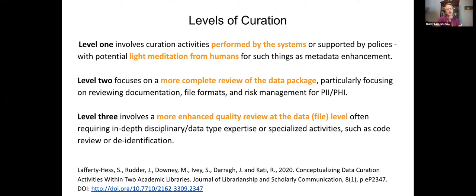How do you determine what are the most essential activities for your repository, especially when you may have limited resources? Based on research from librarians from the University of North Carolina and Duke University, they analyzed their repository curation activities and offer three distinct levels of curation. Level one curation focuses just on the repository program or the system - the repository itself facilitates self-deposit and could have some light mediated deposit, generally in the metadata to help discovery.